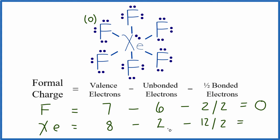8 minus 2, that's 6, and then 6 minus 6 is 0. So the formal charge on the xenon, I'm going to write it right here, is 0.